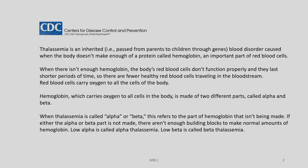This is the information as available in CDC regarding thalassemia, which is an inherited disease, a blood disorder caused when the body does not make enough of a protein called hemoglobin, which is an important part of red blood cells. When there is not enough hemoglobin, the body's red blood cells do not function properly and last shorter periods of time, so there are fewer healthy red blood cells travelling in the blood stream. Red blood cells carry oxygen to all the cells of the body.